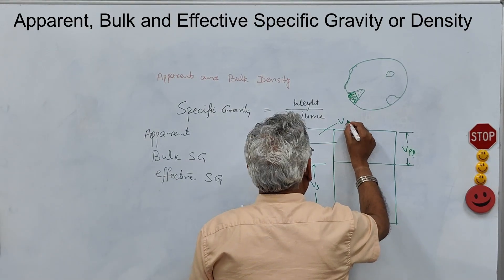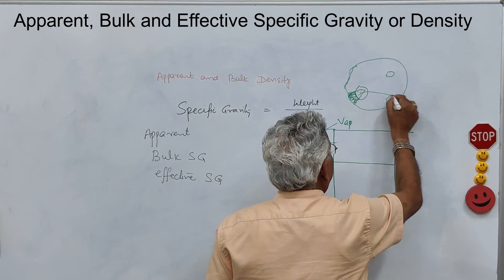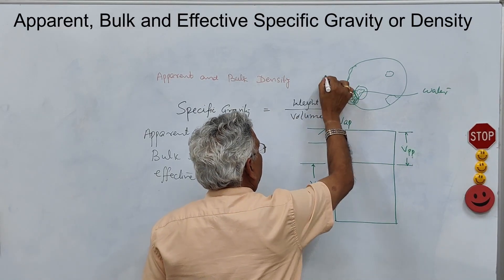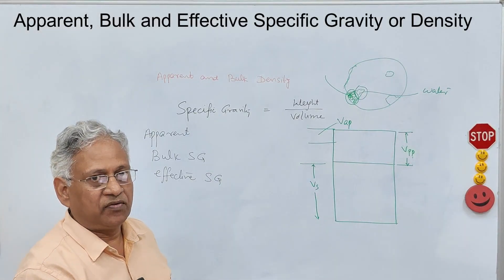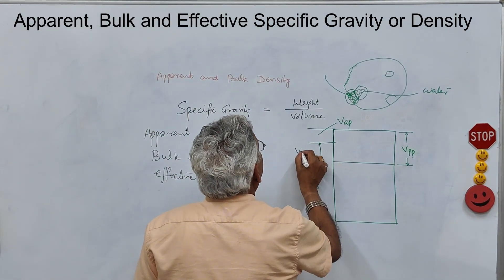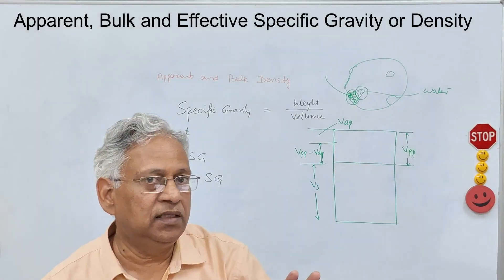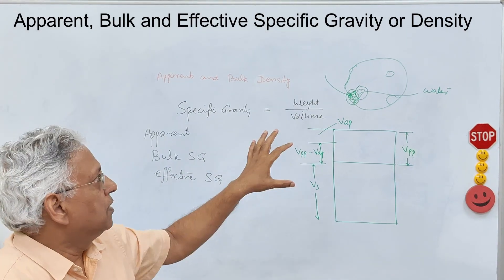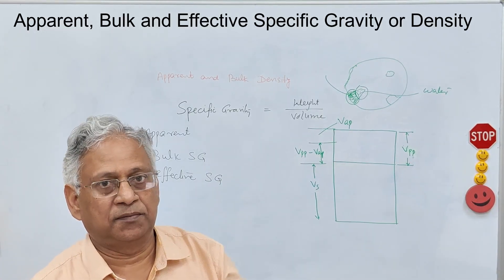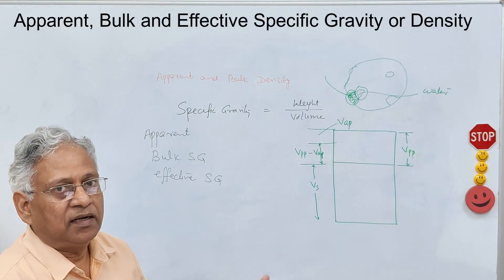A part of Vpp will absorb the asphalt — let us call this Vap — and the remaining portion is the voids covered by water. So these two portions are different on the surface of each aggregate particle: Vpp minus Vap represents the water-absorbing pores, and Vap is where the bitumen is absorbed. There are also some internal voids that are not absorbing water or asphalt, so they become part of the solid. But when you break the aggregate particle into small pieces, some of these internal voids can be exposed, changing the pores absorbing water and pores absorbing asphalt.